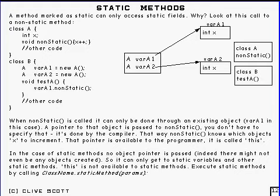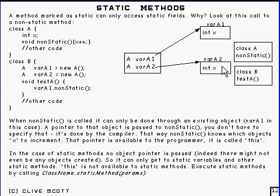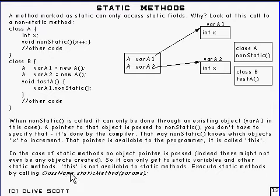Not only are there static fields, there are also static methods. In a static method, you can only access static fields, because there's no pointer to any object passed in — so the only thing you can get is the static stuff within the class. You can access static methods by using the class name followed by dot and the static method name, because you don't need an object. You can also use the object name if you want, but you don't have to. Similarly, class name dot static field allows you to access static fields.